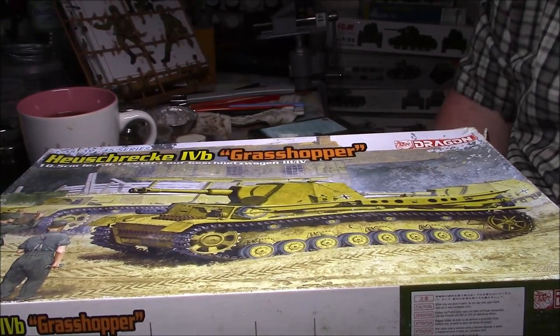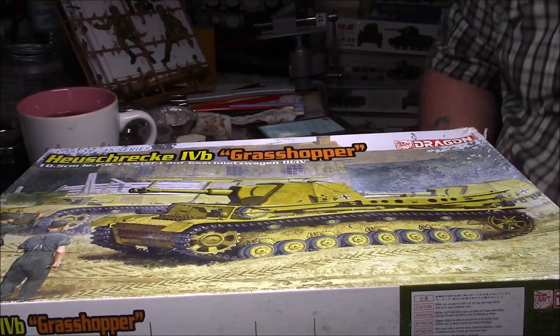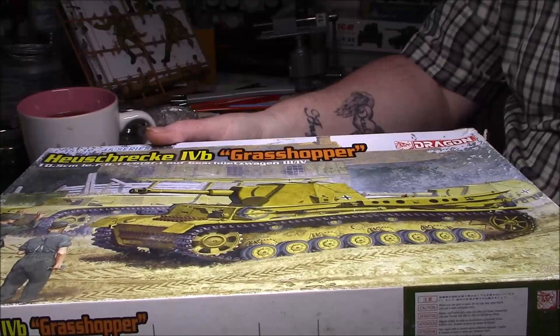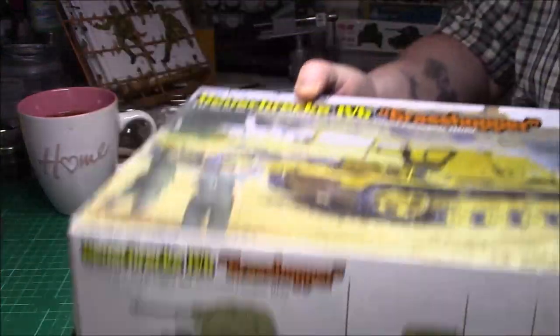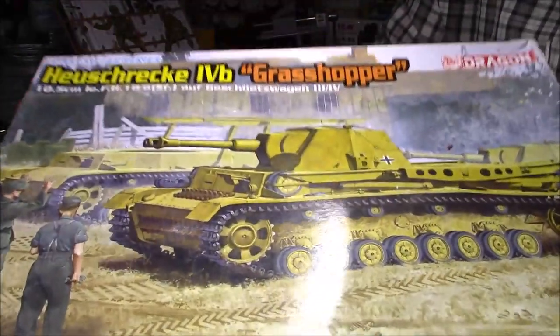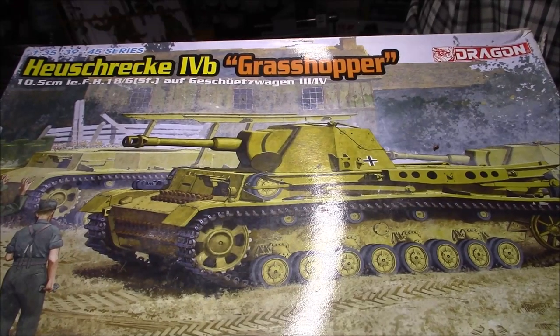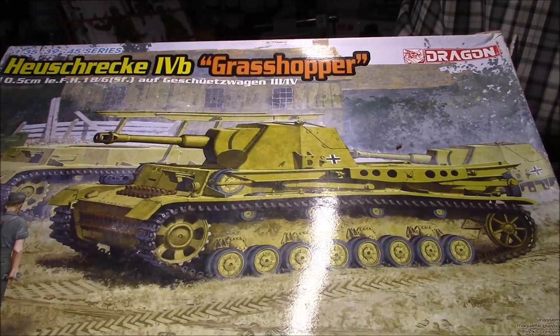Good afternoon chaps, it's Greg here again with a kit review from Telford. As you can see it's an oldish kit, I think from 2007. The box is a bit tatty on the ends but everything was bagged up properly. It's the Heuschrecke IVb Grasshopper, an unusual subject to say the least.